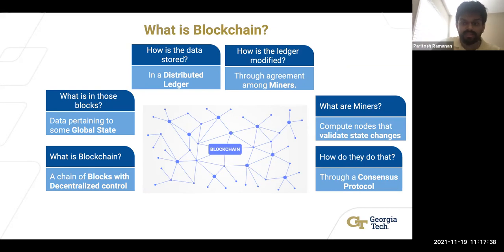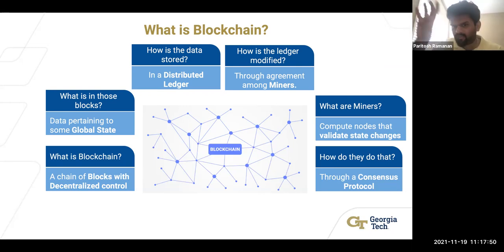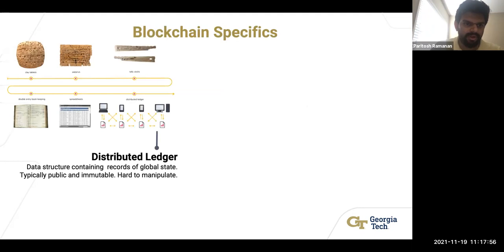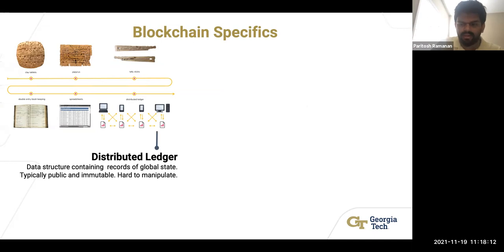Through the consensus protocol, miners constantly modify the blockchain state — more blocks get added as the protocol governs how they enter the chain. In the course of human history, the ledger concept has always been intrinsic to record keeping. Think of it like a spreadsheet tracking amounts owed. A distributed ledger is a data structure containing records of the global state — public and immutable, hard to manipulate.